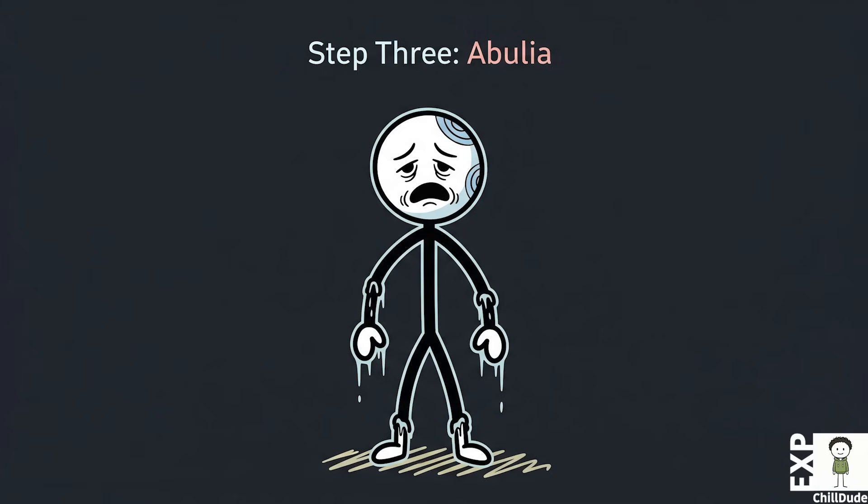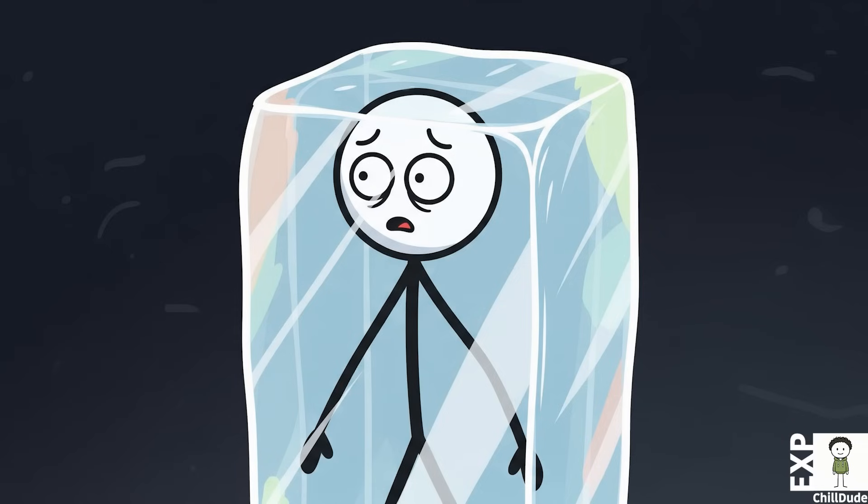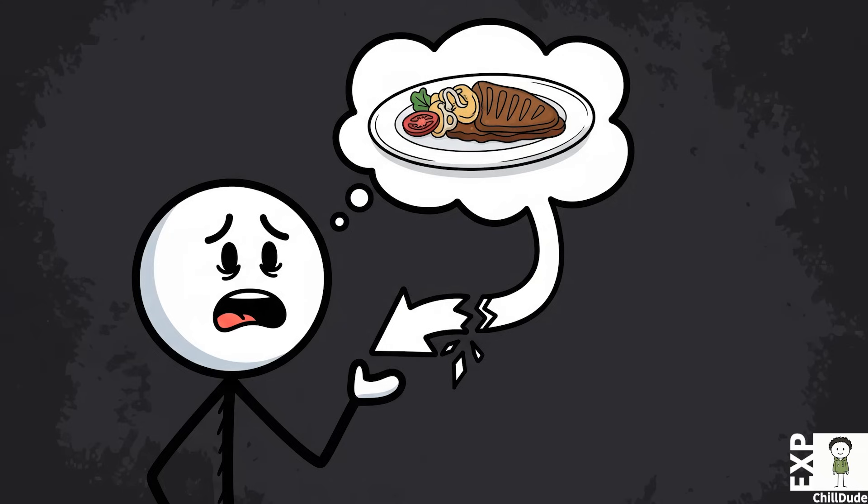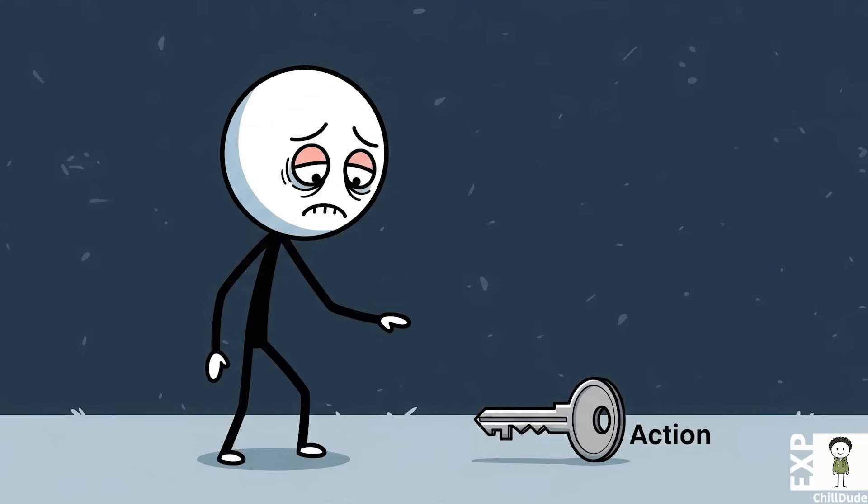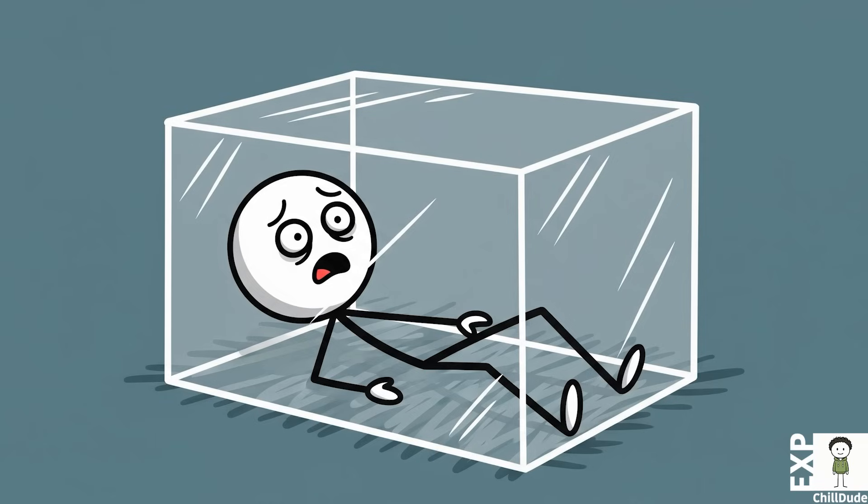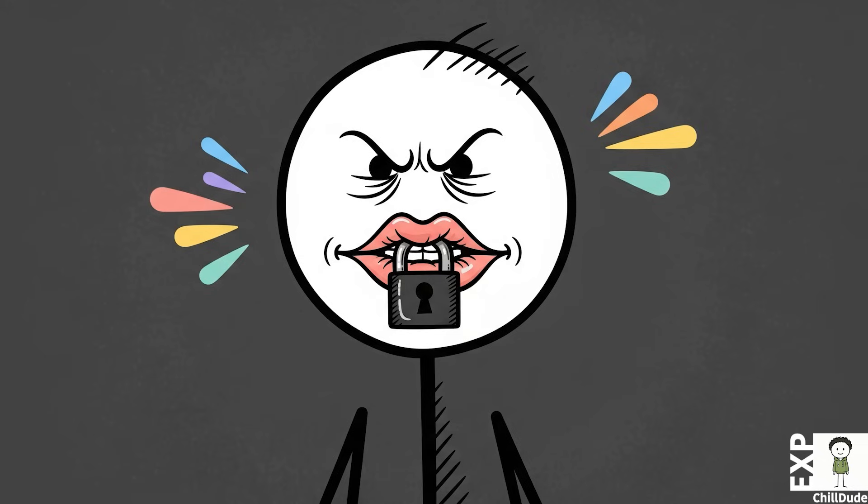The third stage is abulia, a term from neuropsychology that signifies a severe paralysis of the will. The person is still conscious and aware of their surroundings, but they are utterly incapable of initiating purposeful action. They might know they need to get up, to eat, to move, but the connection between thought and action is severed. It's as if the mind's ignition key has been lost. They lie there, often with eyes open, trapped inside a body they can no longer command, a prisoner in their own silent mind.